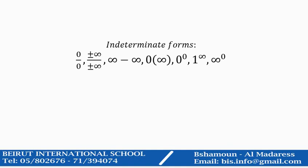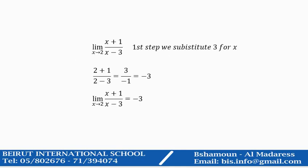The indeterminate forms. These forms are 0 over 0, or infinity over infinity plus or minus, it doesn't matter. Infinity minus infinity, 0 times infinity, 0 to power 0, 1 to power infinity, or infinity to power 0. Any one of these is considered to be an indeterminate form.